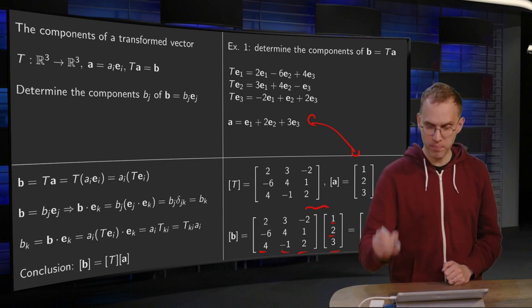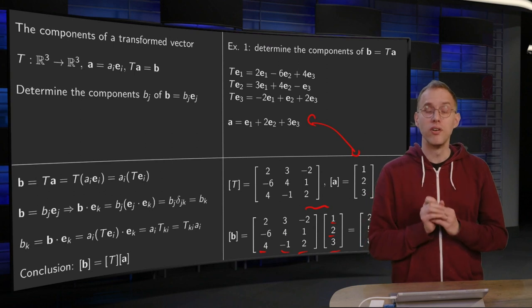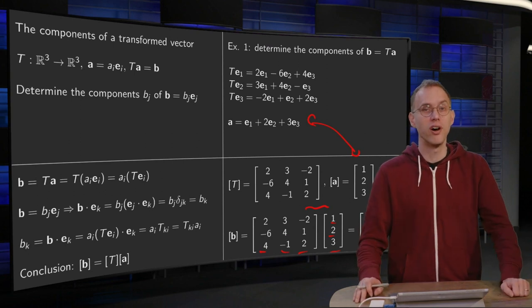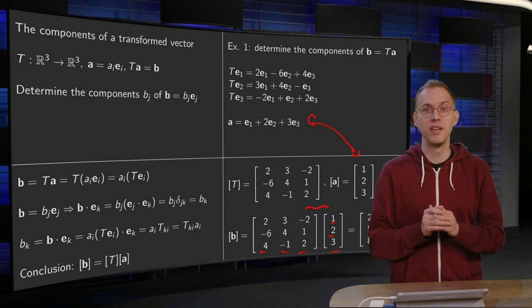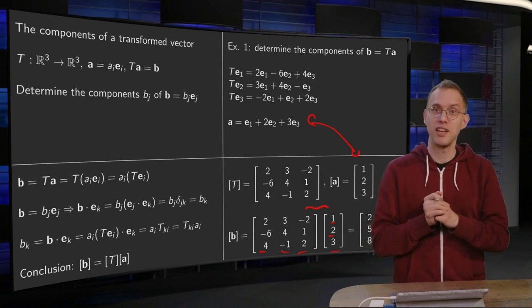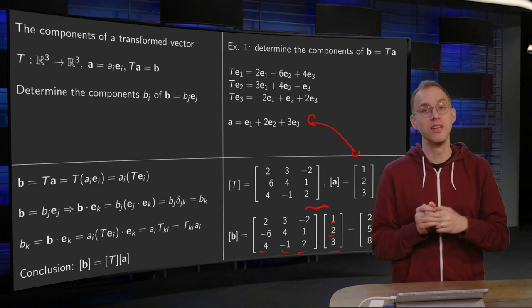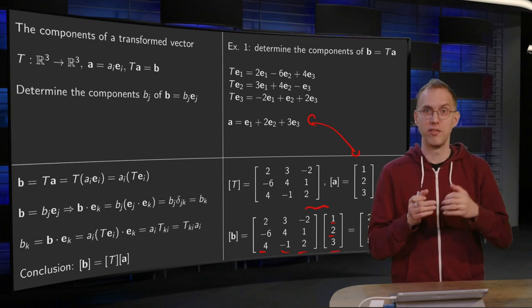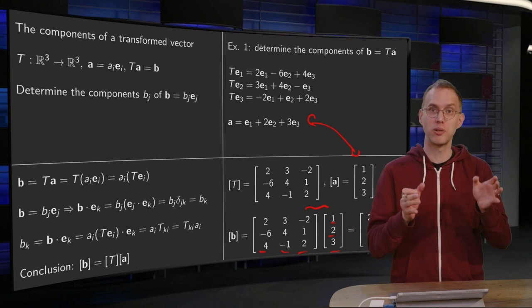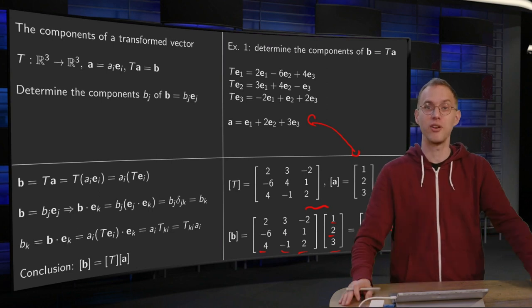So finding the image of some general vector works really similar as in linear algebra. Find the standard matrix of T, find the vector corresponding to A, and just compute matrix times vector, and there you are.